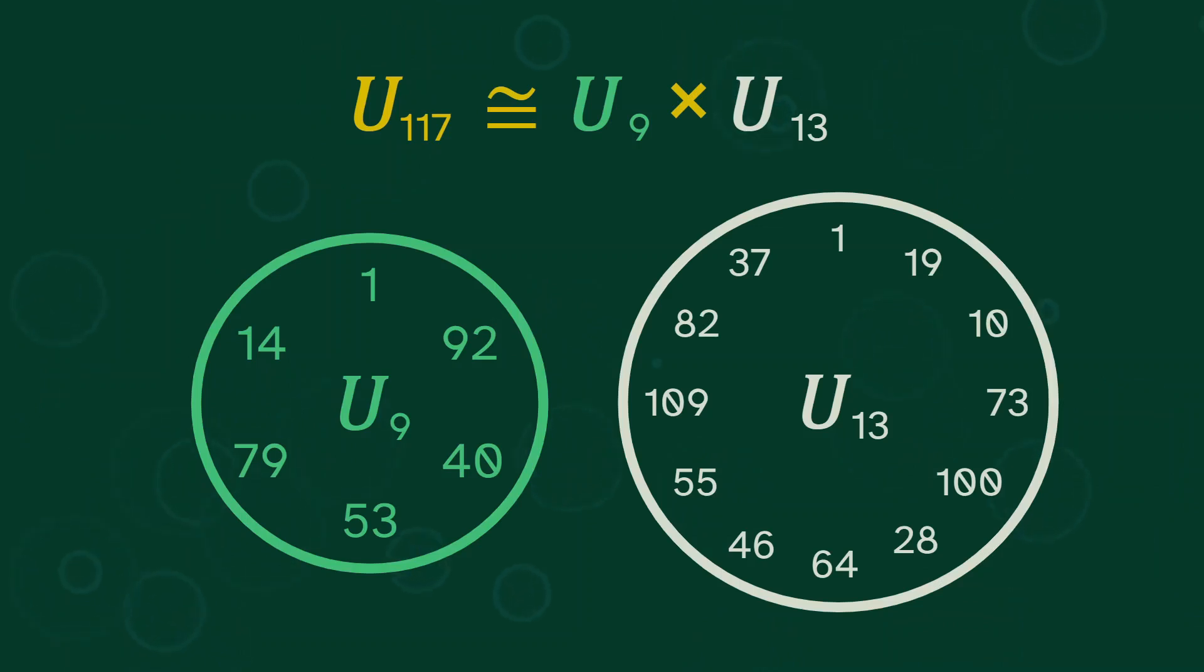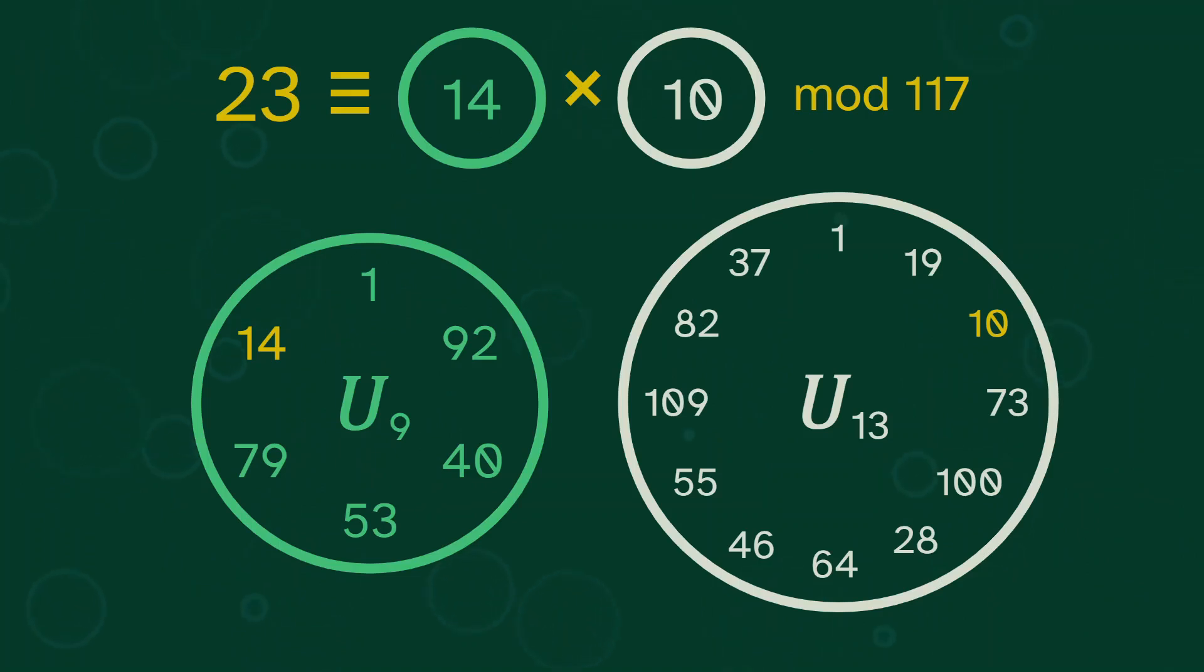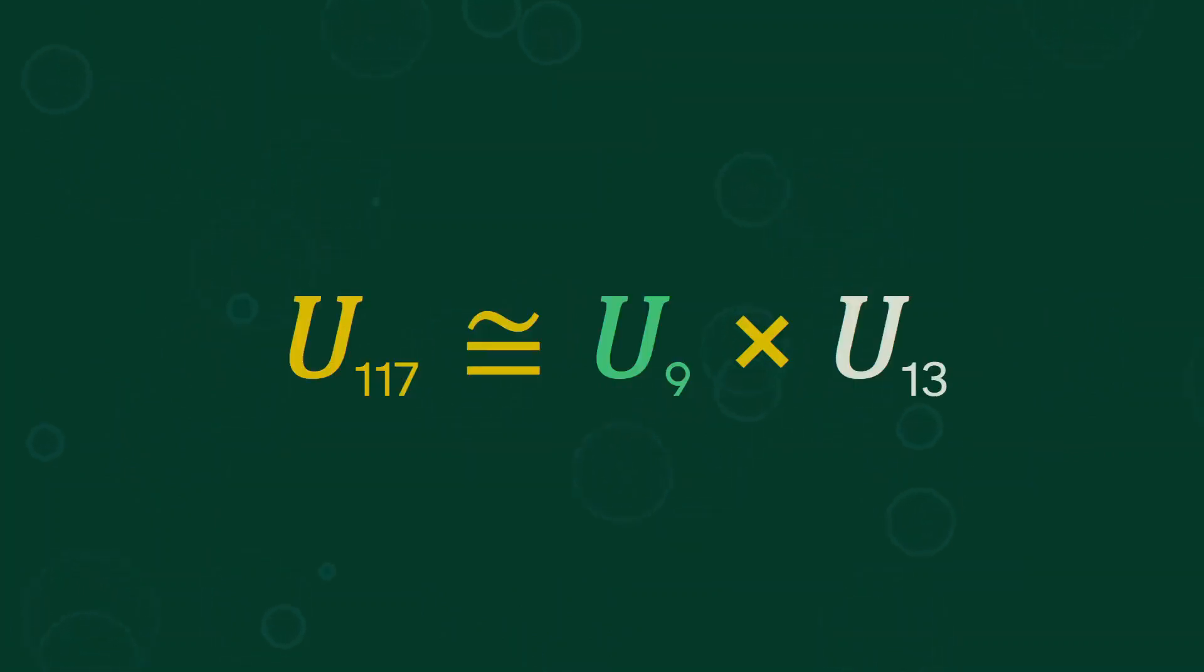This is a representation for the units mod 117. And this split into 9 and 13 can also help us find the positions for any number. For example, how do we represent 23? Well, 23 is 5 mod 9, and so is 14. So 23 should be at the 14 position on this clock. And then 23 is 10 mod 13, so it should be at the 10 position on this clock. So our representation for 23 is 14 times 10. And 140 is 23 mod 117.